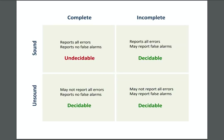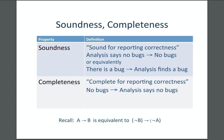The converse of soundness is called completeness: if the actual program has no bugs, our analysis will say there are no bugs. If we have both completeness and soundness, then our model and the actual program will always match. But as you can see, that's not always going to be possible.